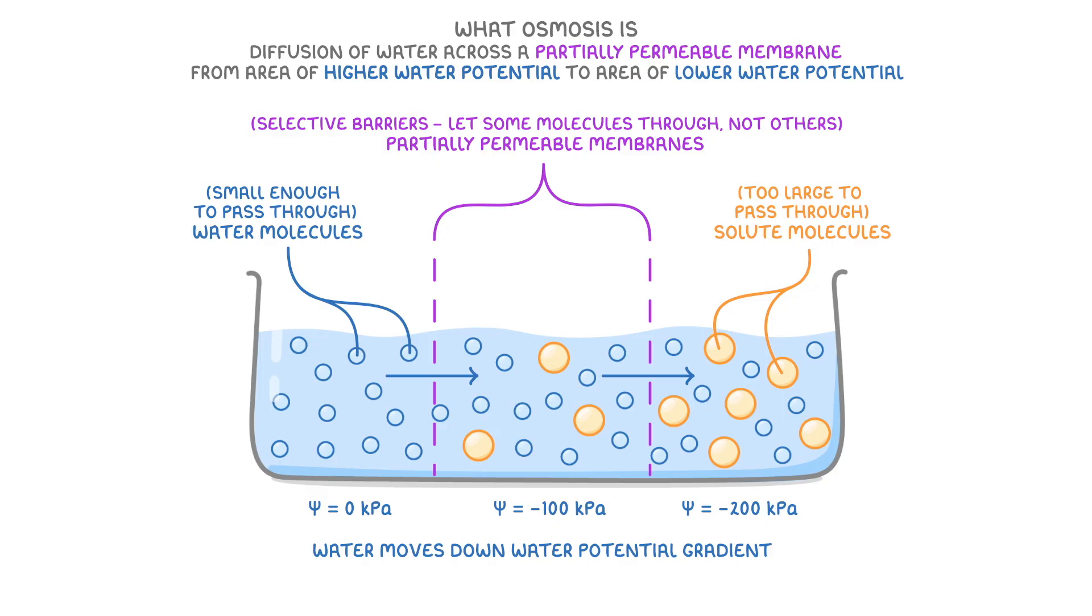Water moves down a water potential gradient, from the section on the left with the highest water potential, over to the sections on the right with lower water potentials. This keeps happening until equilibrium is reached, meaning the water potential is approximately equal throughout the container, and so there's no net movement of water.